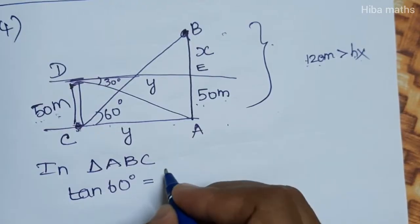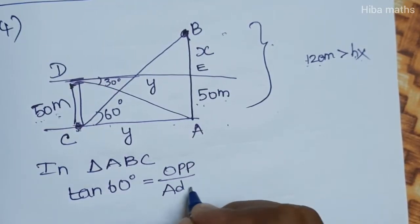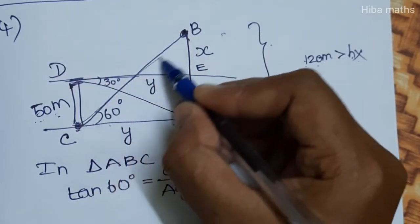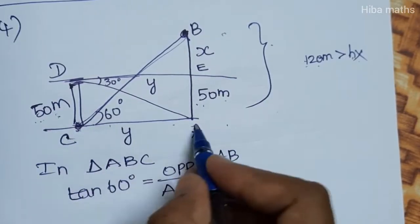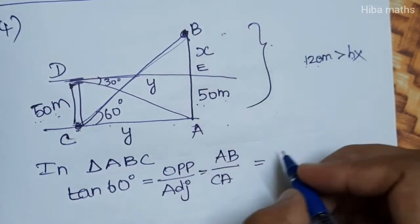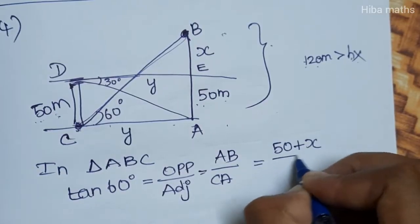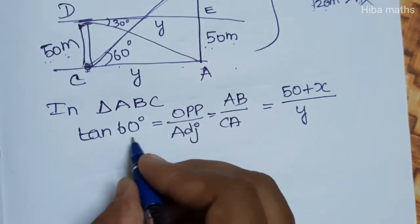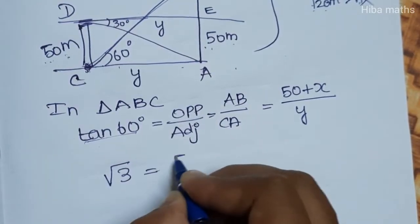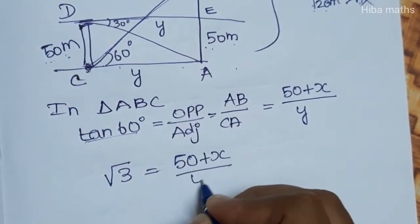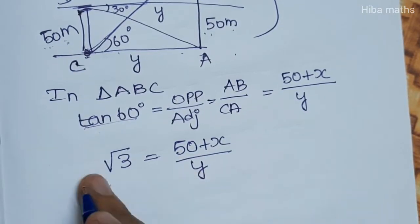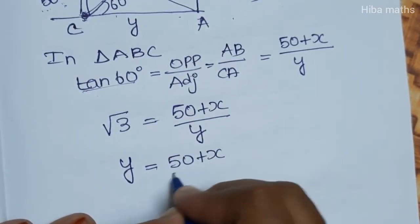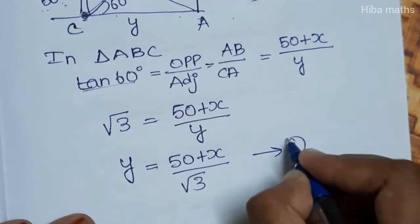Tan 60 degrees is equal to opposite by adjacent. The opposite is the full height AB, which is 50 plus x, and the adjacent is CA, which is y. So tan 60 degrees equals root 3, giving us root 3 = (50 + x) / y. Therefore y = (50 + x) / root 3. This is our first result.